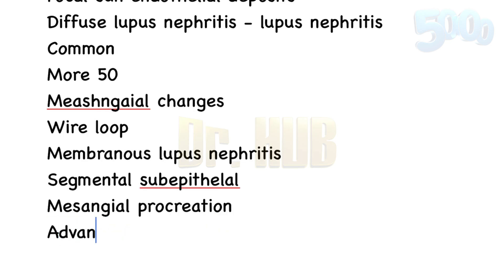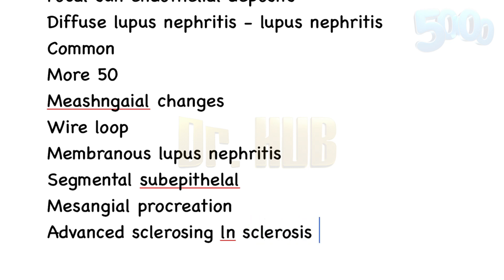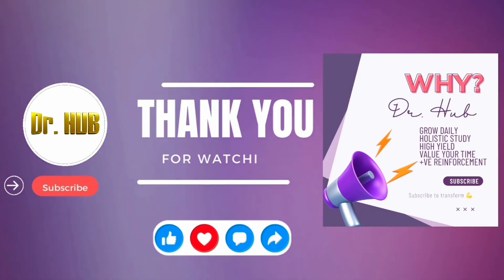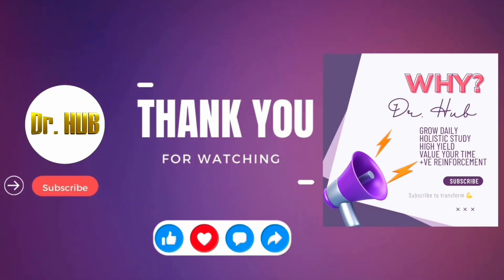Class 6 is advanced sclerosing lupus nephritis. There is sclerosis affecting more than 90% of glomeruli. To learn and grow daily with content like this, please do subscribe.